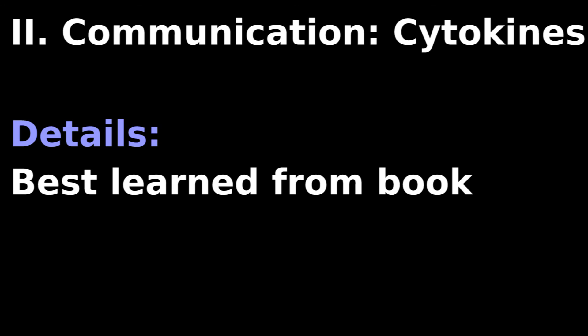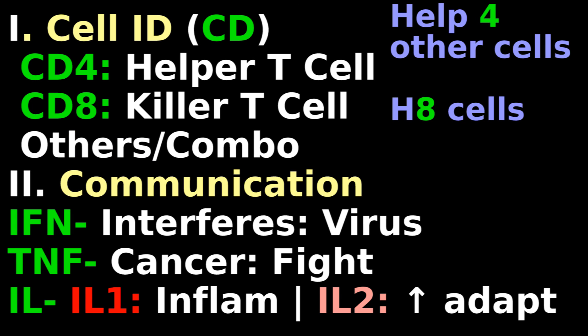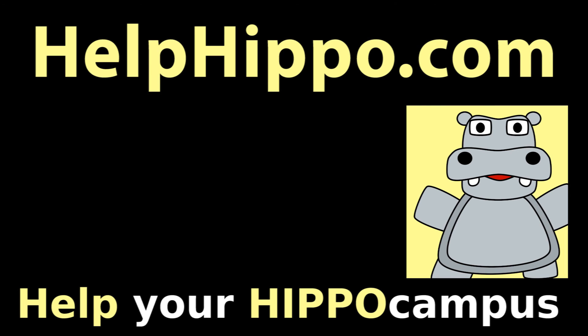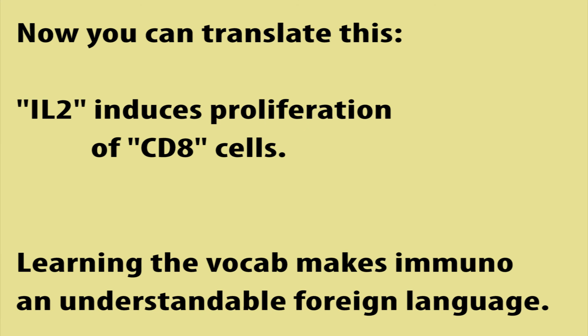These complexities are best learned from a textbook table, now that you have an overview of CD, IL, and other alphanumeric immuno terms. Pause and review. Help your hippocampus.